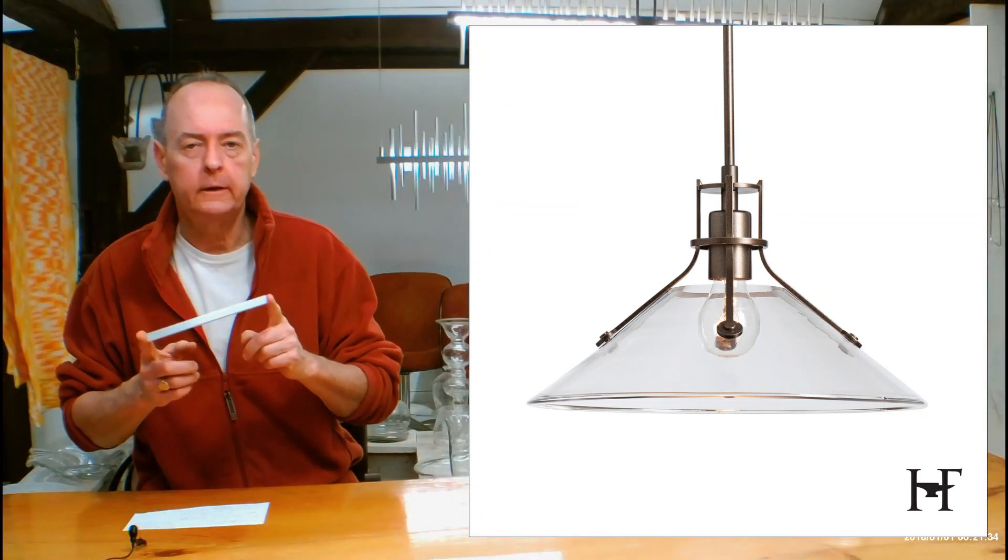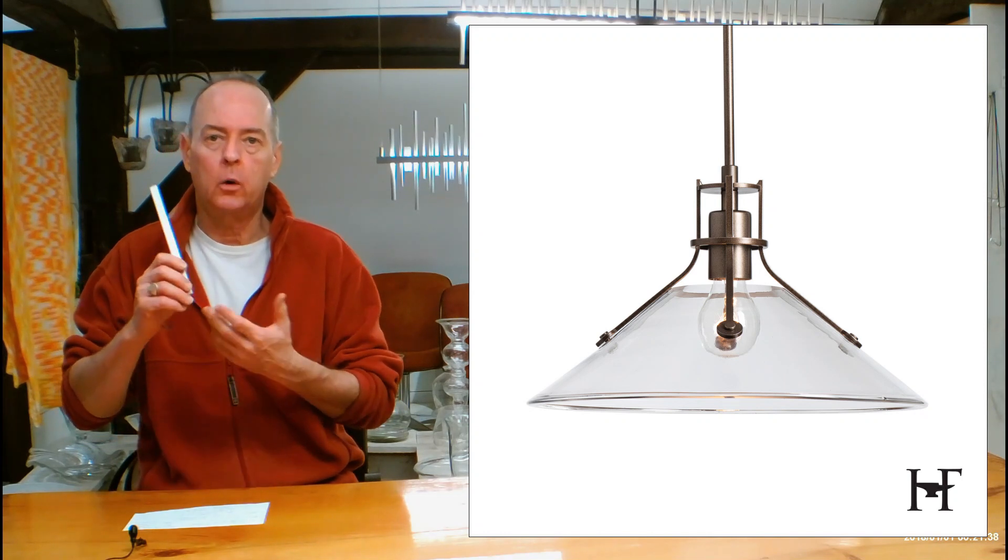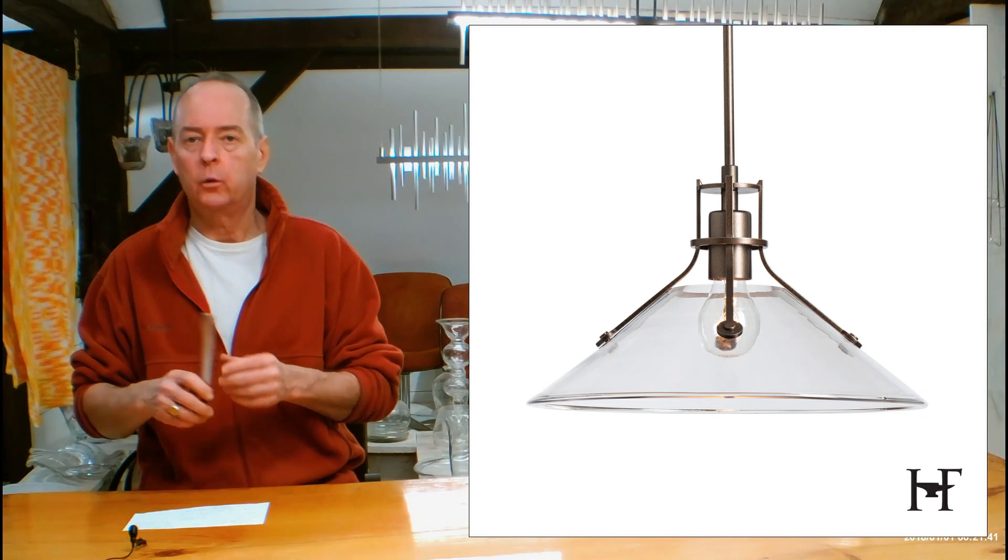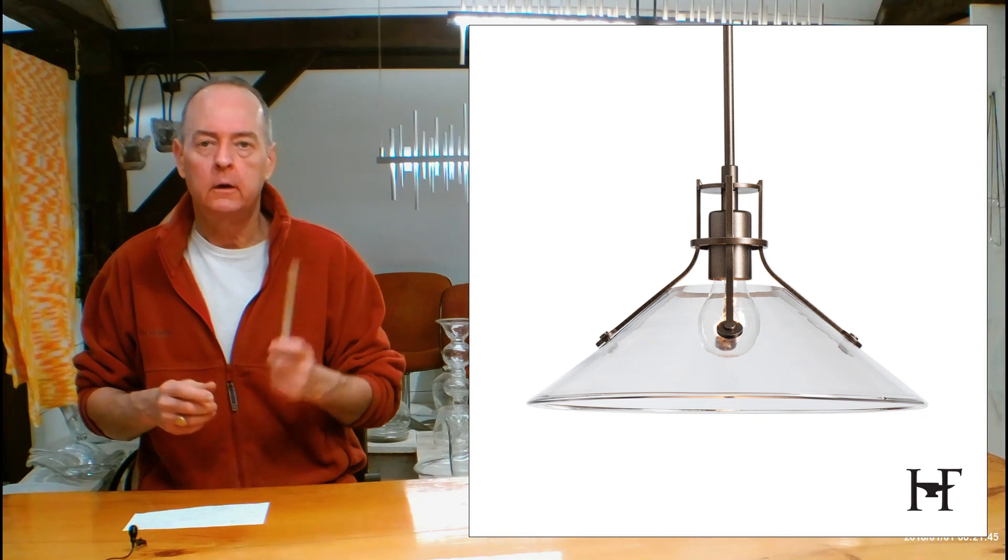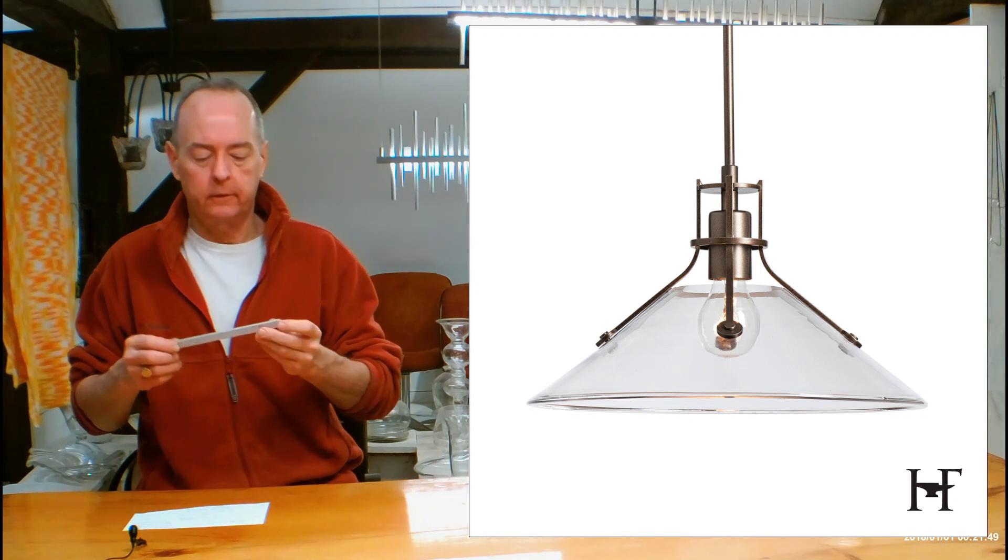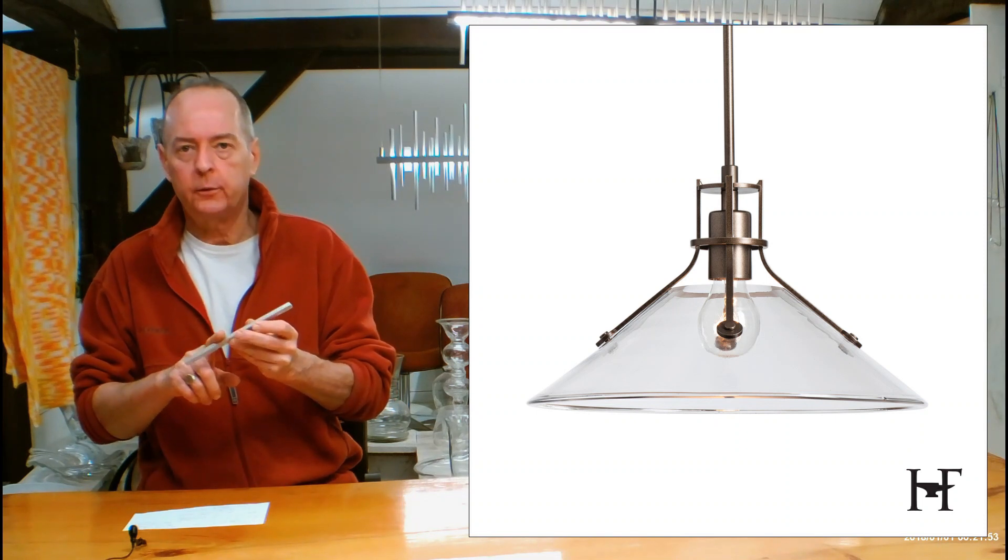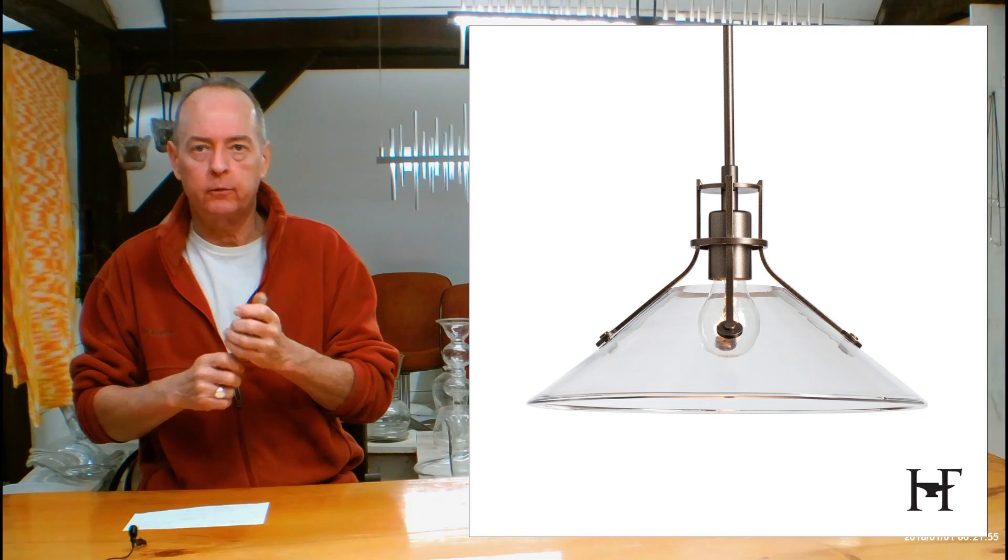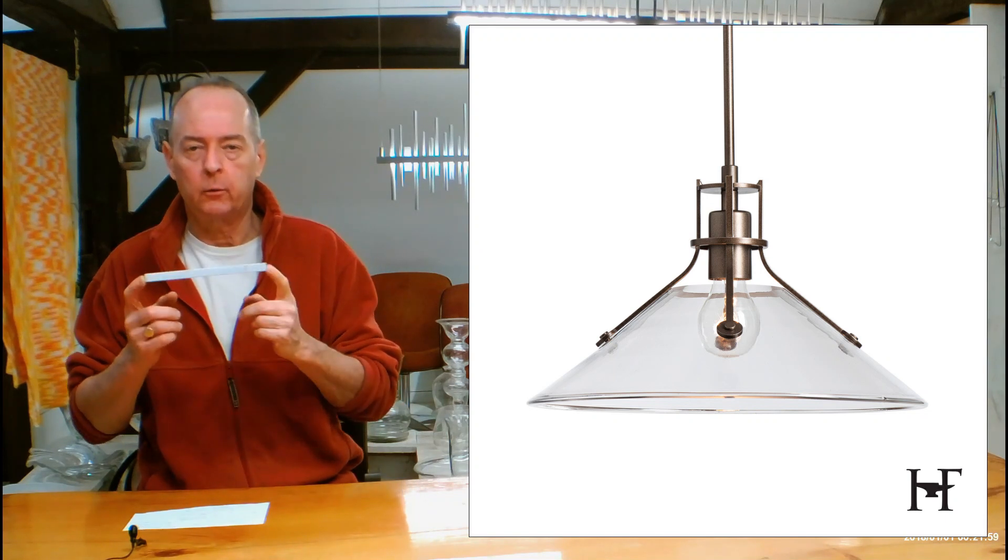Hubbardton Forge only uses aircraft-grade aluminum to make their outdoor fixtures. Aluminum holds up the best in incredibly harsh environments. When you're out and you look up in the sky and you see all those jet airliners running around up there, those are all made out of aluminum for a reason. And part of that reason is it holds up great. It also forges beautifully, holds finished beautifully. It doesn't rust. Remember that. It's very important. And they're virtually indestructible when they're all finished.